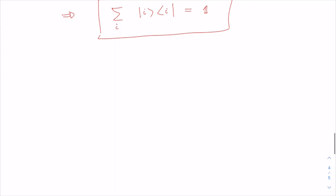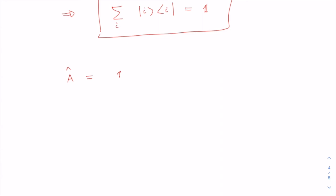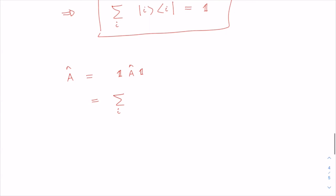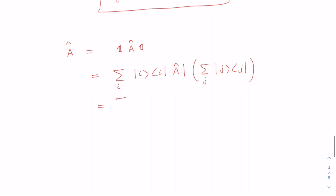The utility of the completeness condition becomes clear when representing an operator in matrix form. For an operator Â, I can multiply both sides by the identity operator twice: Â = (Σᵢ |i⟩⟨i|) Â (Σⱼ |j⟩⟨j|). This gives Â = Σᵢ,ⱼ |i⟩⟨i|Â|j⟩⟨j|. The quantity ⟨i|Â|j⟩ is just a number, so I can write Â = Σᵢ,ⱼ ⟨i|Â|j⟩|i⟩⟨j|.